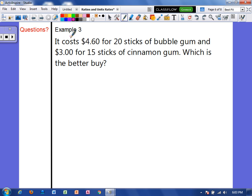Alright. Example three, it costs $4.60 for 20 sticks of bubble gum and $3.00 for 15 sticks of cinnamon gum, which is the better buy. So in this problem, we are identifying the unit cost for each type of gum. So we want to know how much is one stick of bubble gum and how much is one stick of cinnamon gum. And we want to go with whatever is cheaper.